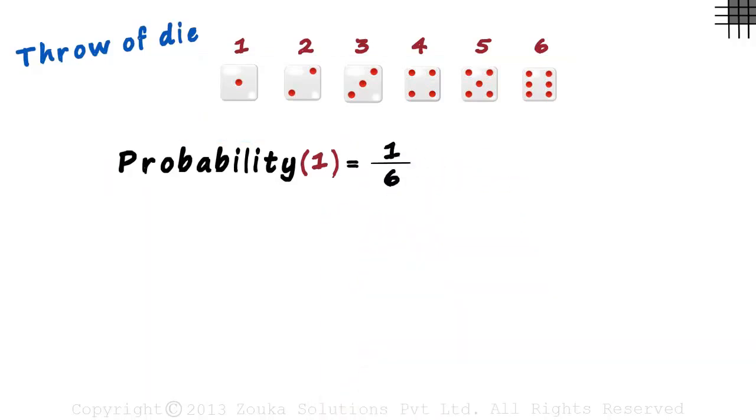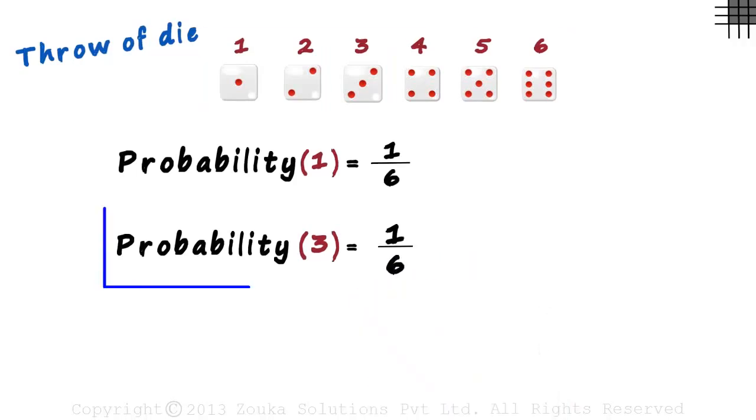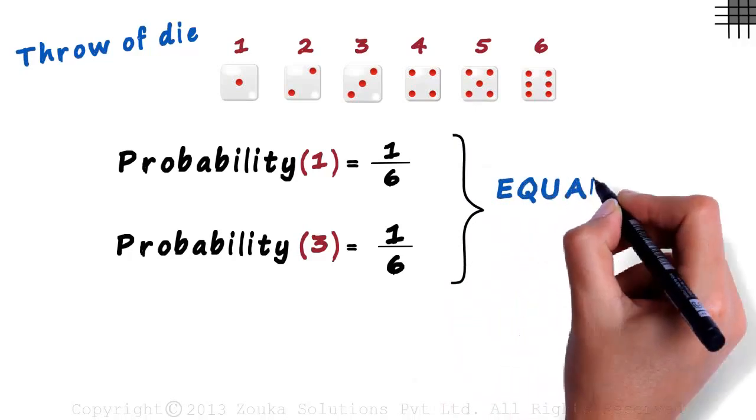Here's the next question. What's the probability of getting a 3? There is only one way in which we can get a 3. And yes, there are six possible outcomes. The probability of getting a 3 is also 1 sixth. Since the probabilities are the same, we say that these two events are equally likely.